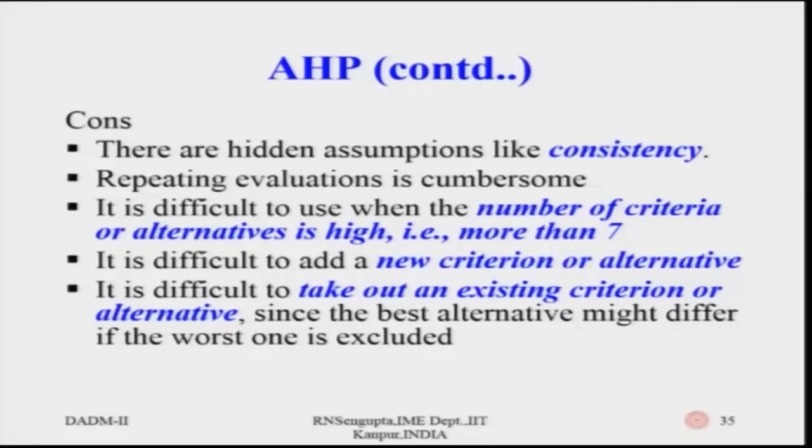The disadvantages of AHP include hidden assumptions about consistency. It is difficult to maintain equal consistency across all decisions, because when comparing i to j, you ignore all other criteria, and then when comparing j to k, i is removed. Combining i-j, j-k, and i-k rankings may not yield a good consistency ratio. This needs to be carefully considered.